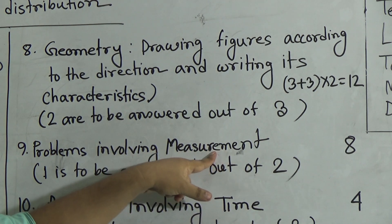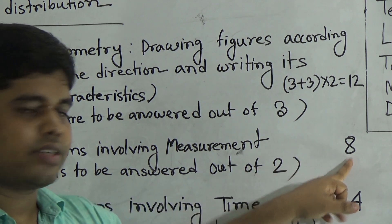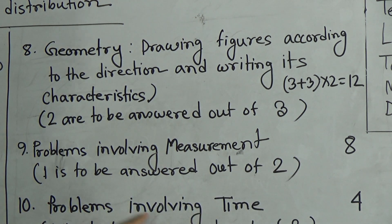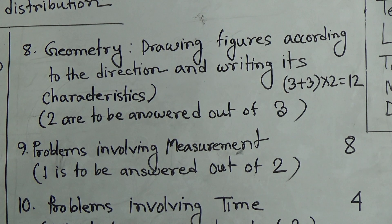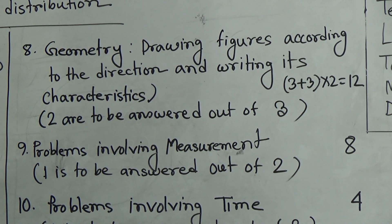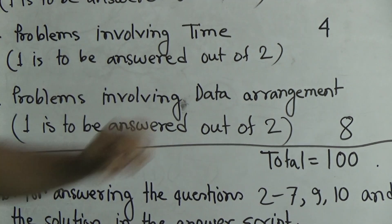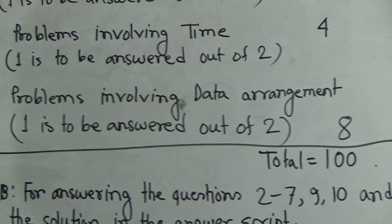Question number 9 is problems involving measurement, from Chapter 11A. One question has to be answered out of two, and these carry 8 marks. Question number 10 is problems involving time — one to be answered out of two, carrying 4 marks. Question number 11 is problems involving data arrangement — one to be answered out of two, carrying 8 marks. If we add the total marks, we get 100.